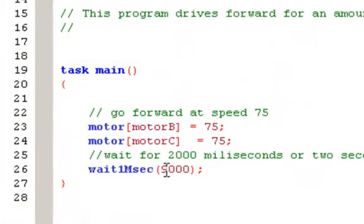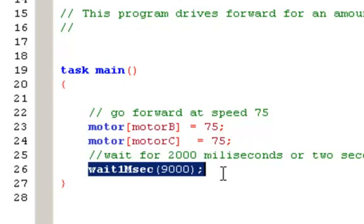Okay, so this program is actually going forward for nine seconds, not the two seconds we had gone just a second ago. So now you can see that if I increase the amount of time that my robot is waiting, that it will go for a longer distance.